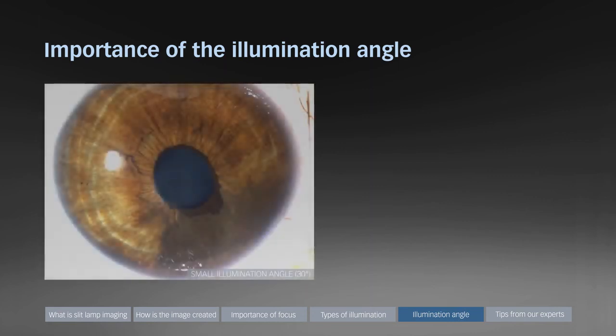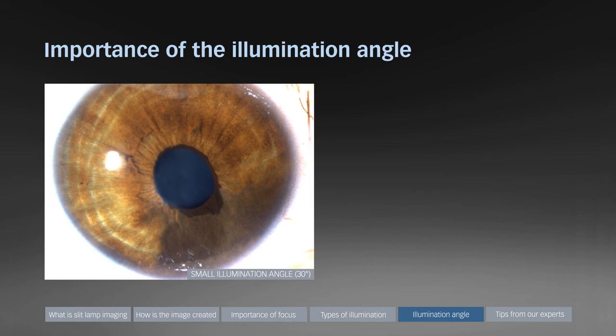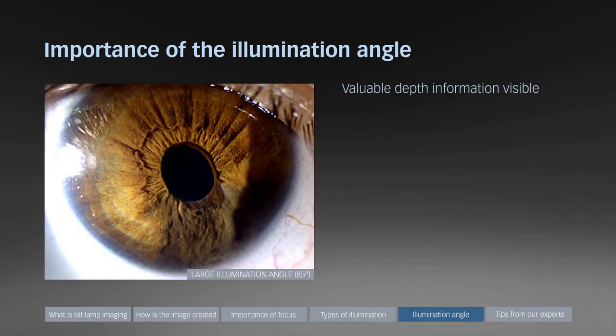This image has been captured with a small illumination angle of about 30 degrees between microscope and illumination. It nicely shows the color of the iris, but it does not give any depth information. The same eye has been captured with a large illumination angle of 85 degrees. Now the shadow casting exposes 3D information of the tumor.